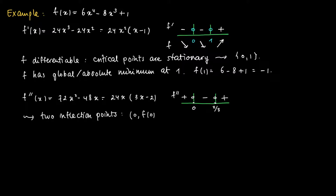The inflection points are (0, f(0)) and (2/3, f(2/3)). So the inflection points are given by (0, 1) and (2/3, minus 5 over 27).